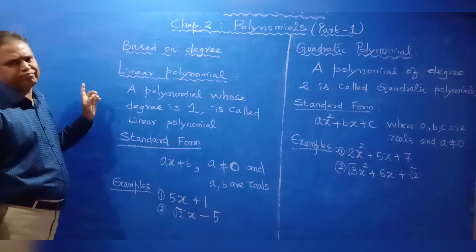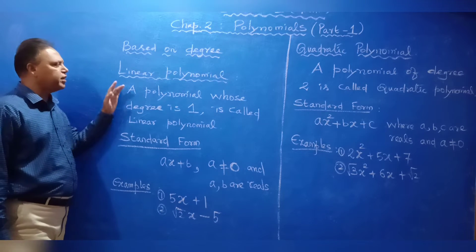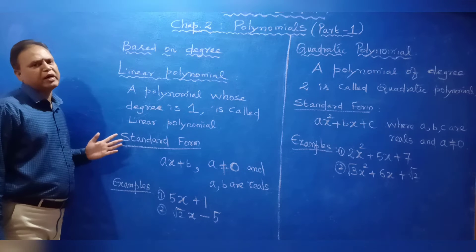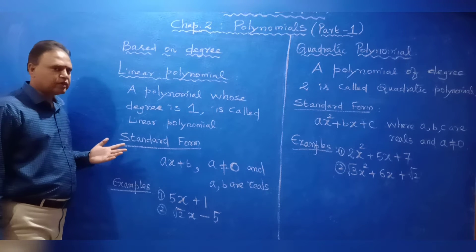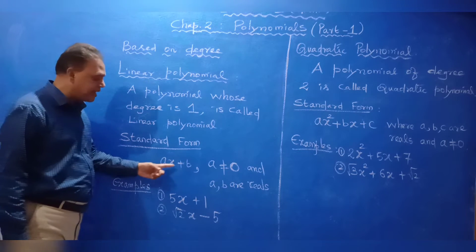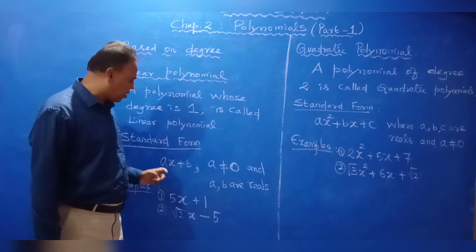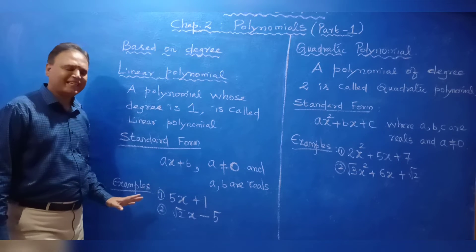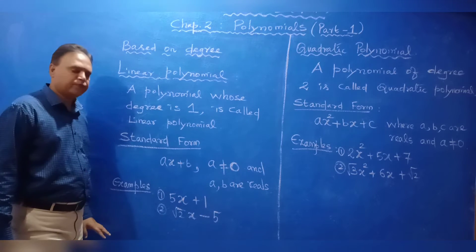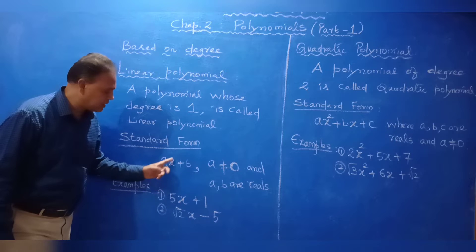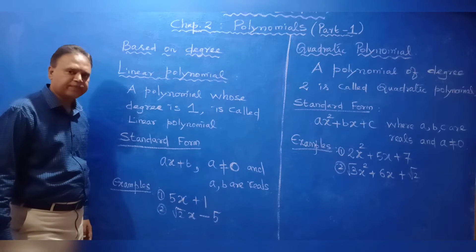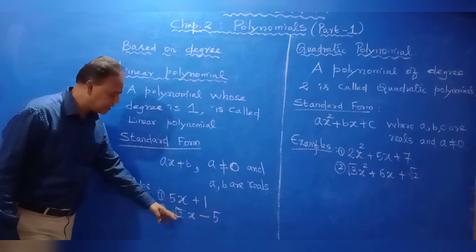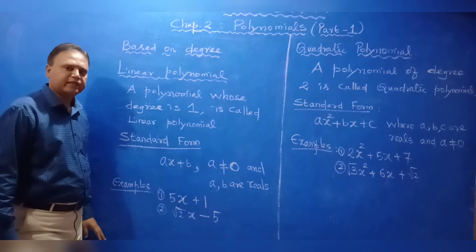Next, classification based on degree. A linear polynomial is a polynomial whose degree is 1. Its standard form is Ax plus B, where A is not equal to 0 and A, B are real numbers. Examples: 5x plus 1, and root 2 times x minus 5 — here root 2 is a real number, specifically an irrational number, but all rational and irrational numbers are called real numbers.